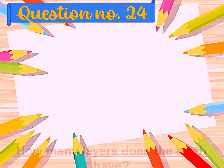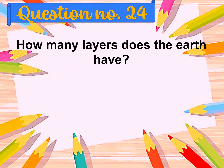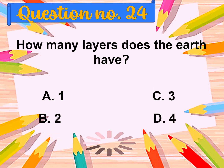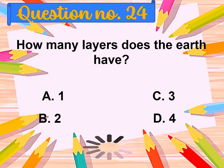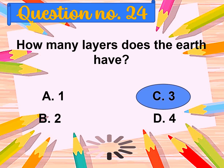Question number twenty-four: How many layers does the Earth have? A. One, B. Two, C. Three, D. Four. The correct answer is three.